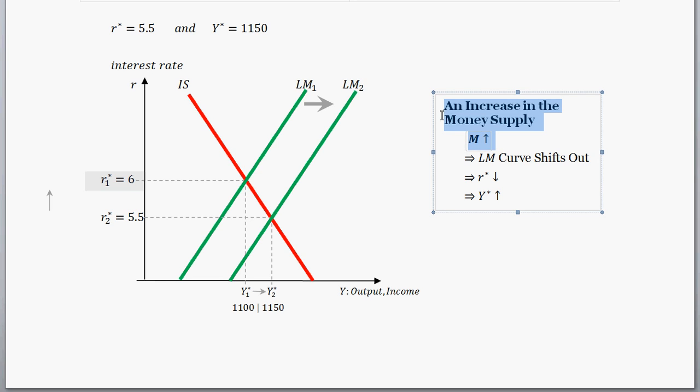So given an increase in the money supply, M going up, what happens to our economy? Well, the LM curve shifts out, the equilibrium interest rate decreases, and the equilibrium output increases.